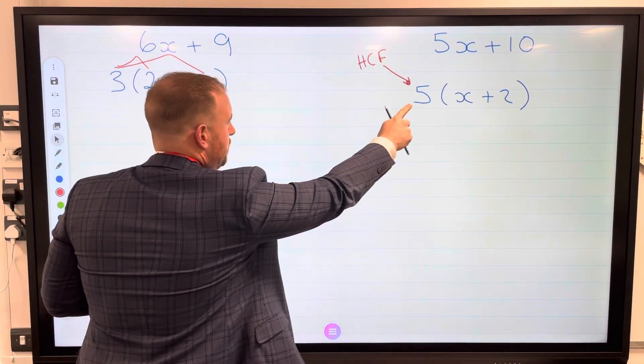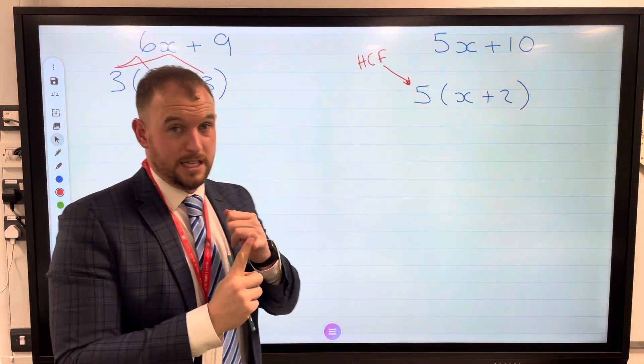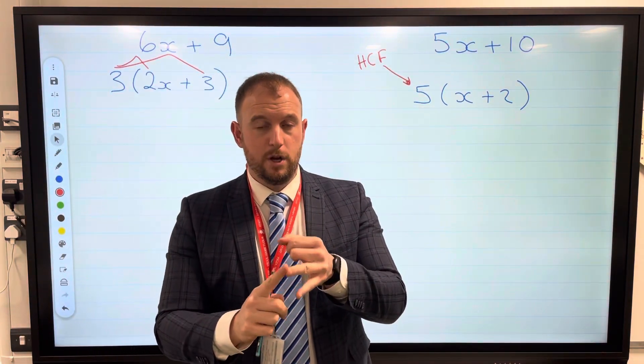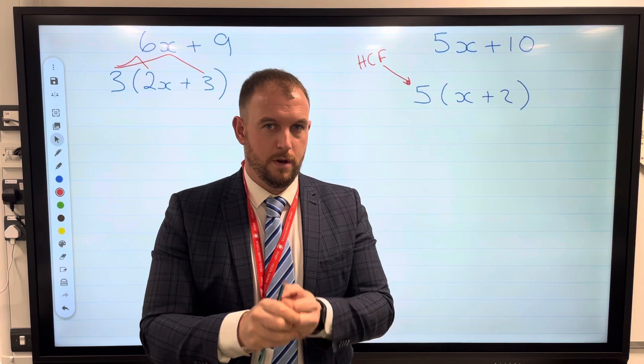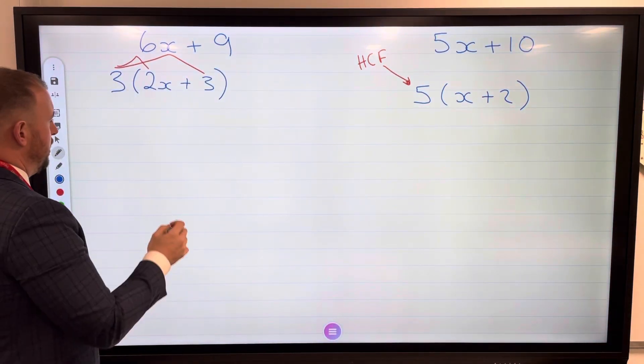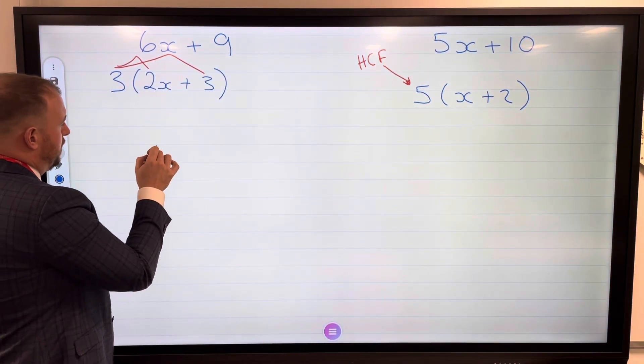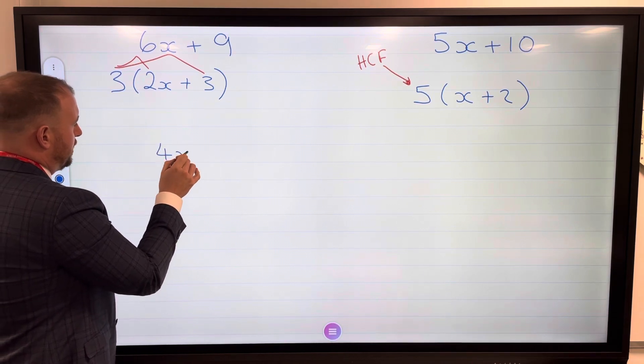These expressions are quite nice, easy numbers. Now this highest common factor could be a letter, it could be a number, it could also be both. Let me show you where both comes into play here.